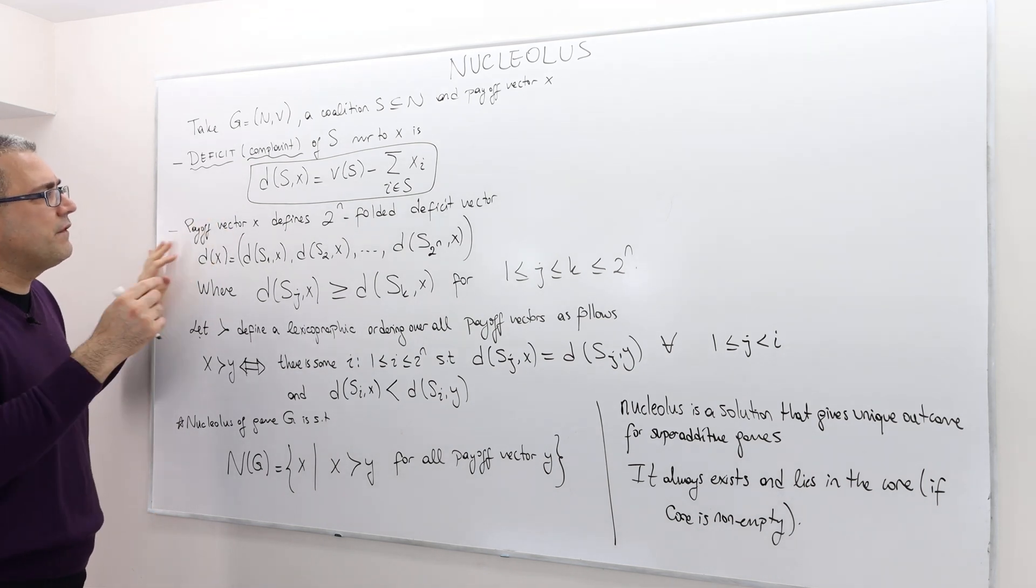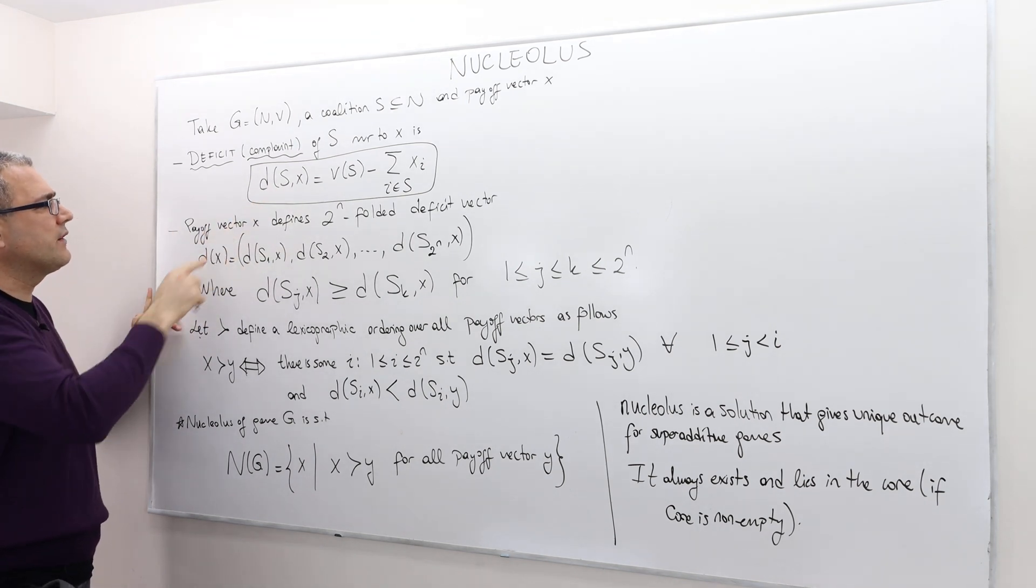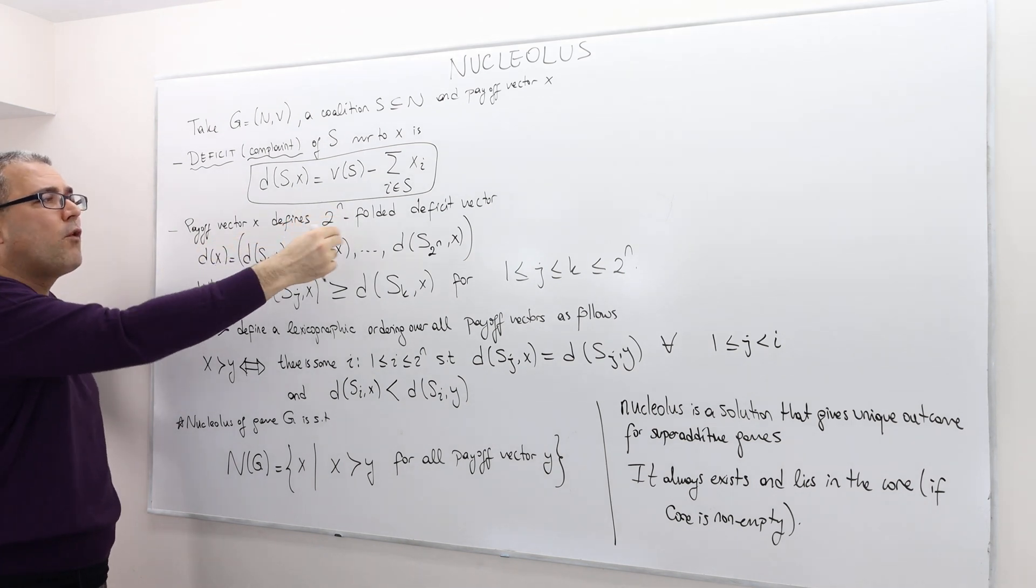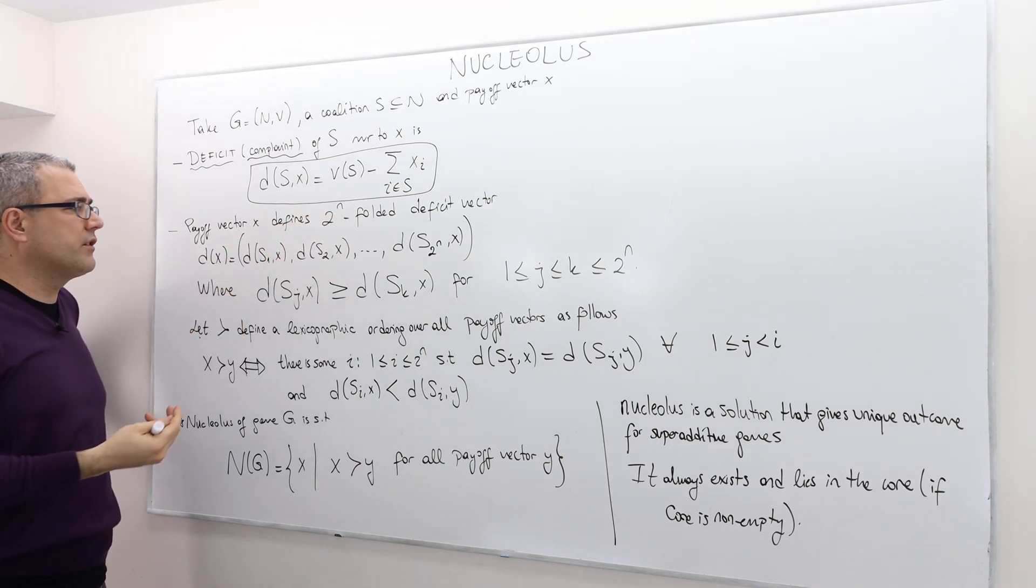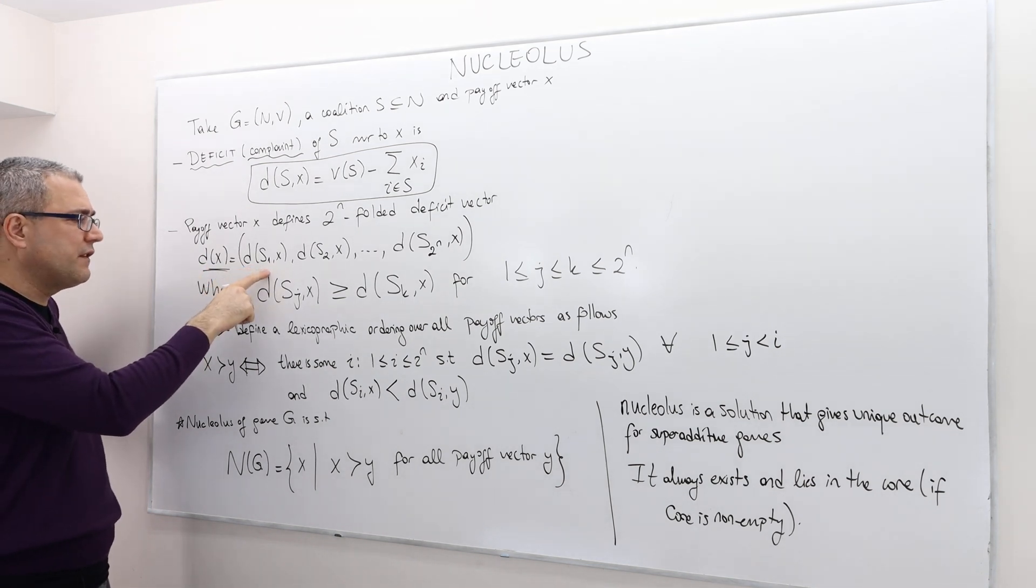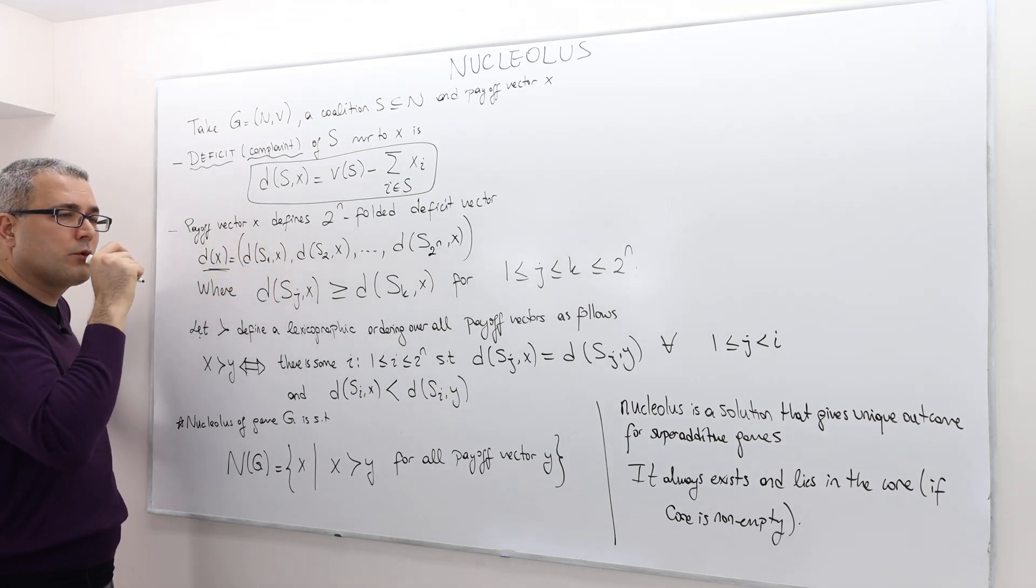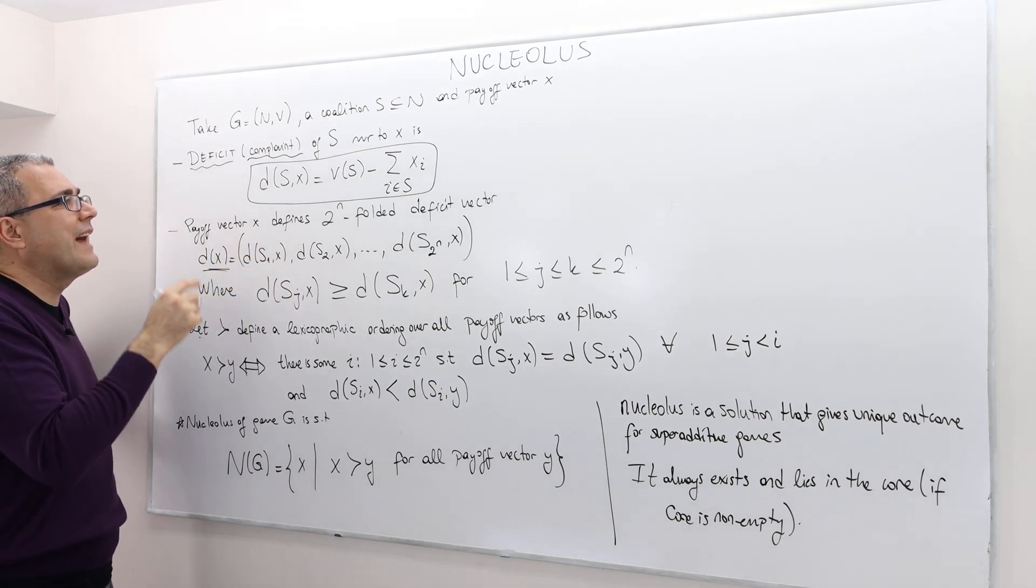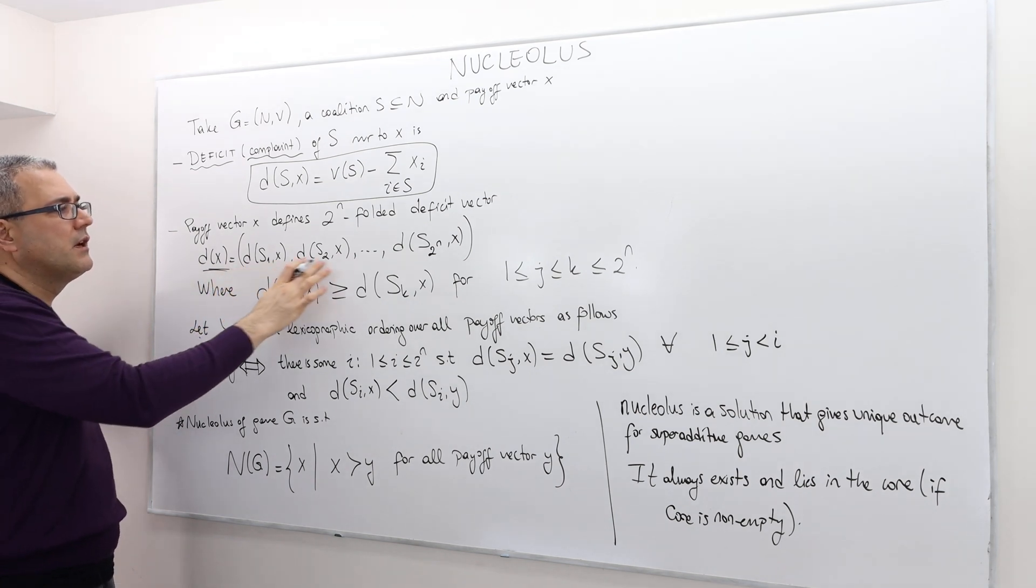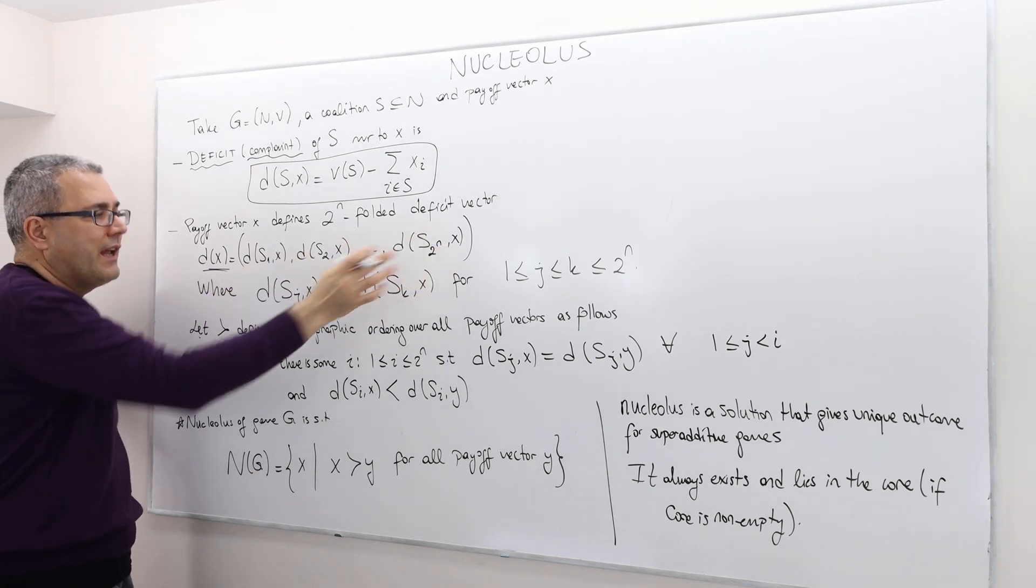Once we define the deficit for each coalition for any given payoff vector x, we define a 2 to the power n folded deficit vector. We denote it by dx. It basically calculates the deficit of every single coalition that could be formed out of those n players.